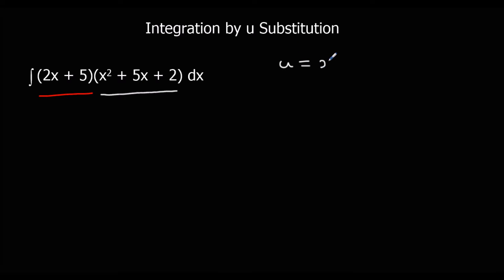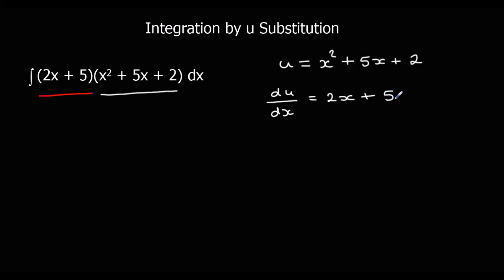So u equals x squared plus 5x plus 2, and its derivative du/dx is 2x plus 5. What we're going to do is, instead of differentiating with respect to x, differentiate with respect to u. To do that we change dx to dx/du times du — think of it as dividing and multiplying by du.